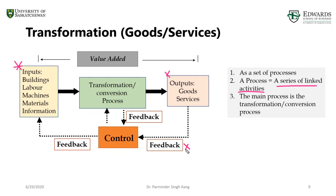We collect feedback from operations — that means collecting data from machines and collecting data from customers based upon the service we have provided. We use that feedback or data in order to control our operations. A simple example: let's say you want to make a cup of coffee for your partner. The coffee-making process is a transformation process with certain inputs such as coffee, sugar, and milk as materials; a coffee maker as a machine; labor — you're making this coffee yourself; and information — you're going to ask your partner what kind of coffee they want, how much milk, how much sugar.